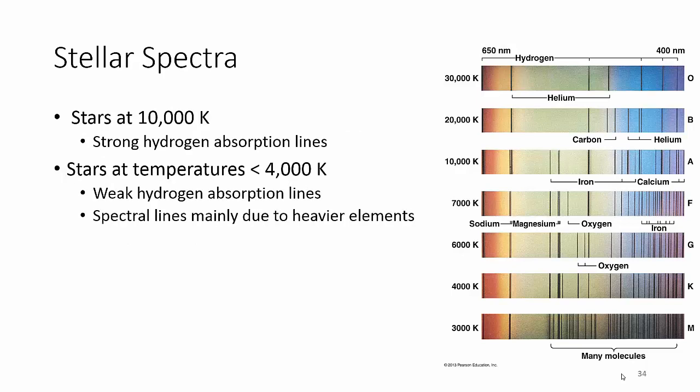Now, stars at about 10,000 degrees Kelvin are going to have strong hydrogen lines. Anything weaker than 4,000, so we're looking at the 3,000, you're going to have weak absorption lines. And this is due because you're going to have a lot more molecules, a lot more stuff in it.